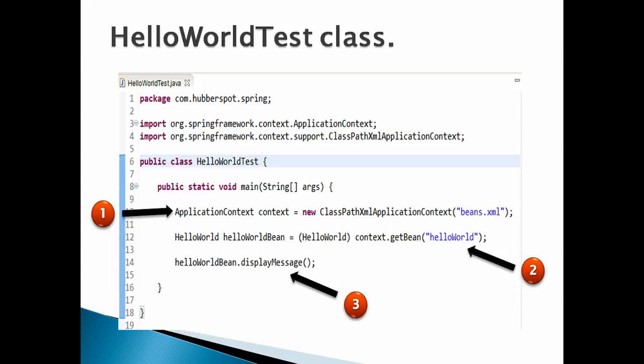We provide ClassPathXmlApplicationContext with a configuration file called beans.xml placed at the classpath of our application. Number 2: to get an object instantiated for a particular bean, we call the 'getBean' method of ClassPathXmlApplicationContext, passing the id for which the object is needed. In our case, we want an object of the HelloWorld bean class, so we provide the id 'helloWorld'. This id must match the id provided in beans.xml.